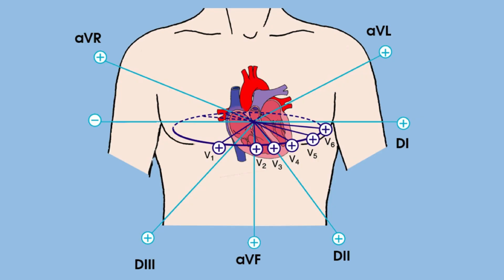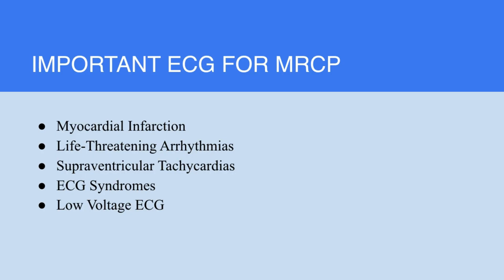These are our famous leads: the AVR, the AVL, the AVF and lead 1, 2, 3, and then the chest leads from V1 to V6.